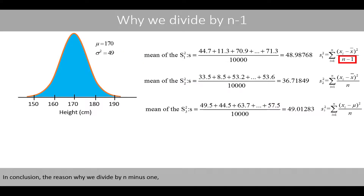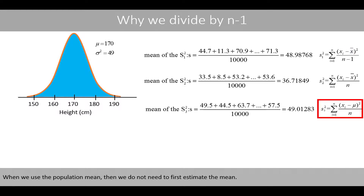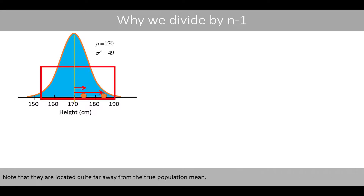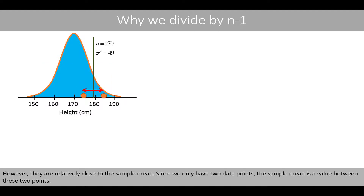In conclusion, the reason why we divide by n minus 1 is because we first need to estimate one parameter — the mean — in order to estimate the variance. When we use the population mean, we do not need to first estimate the mean. To understand why we need to correct by subtracting one from the sample size, let's consider two random data points that are located quite far away from the true population mean but relatively close to the sample mean.